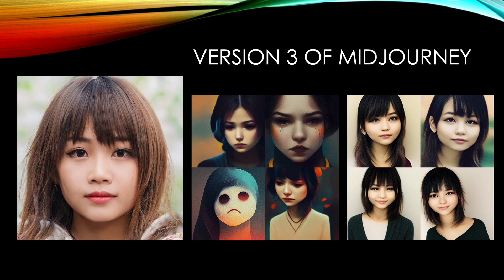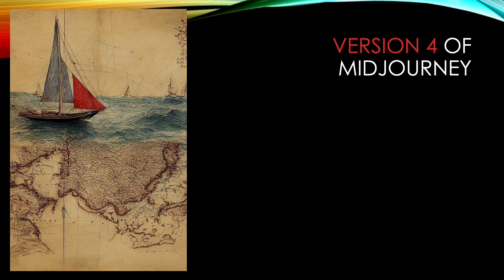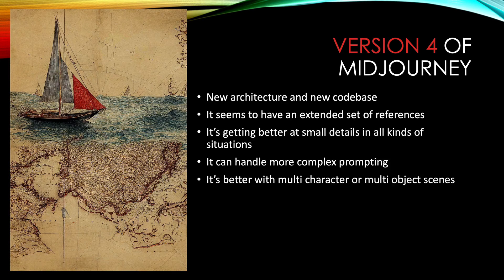So here's some examples of what I've been talking about using version 3. Version 4 has a new architecture for Midjourney and a new code base, quite different from previous versions. It seems to have an extended set of references, a much larger knowledge of creatures, places and more. It's getting better at small details in all kinds of situations, can handle more complex prompting, and is better with multi-character or multi-object scenes.